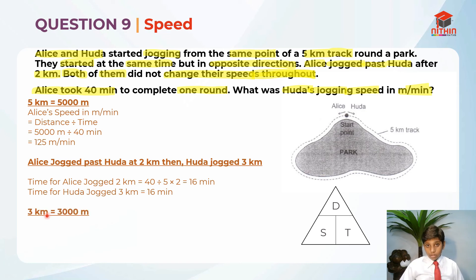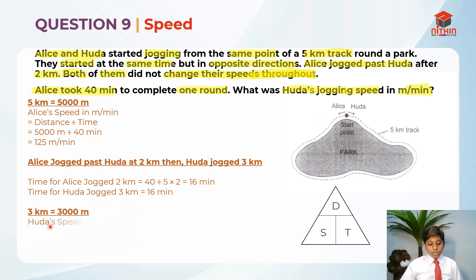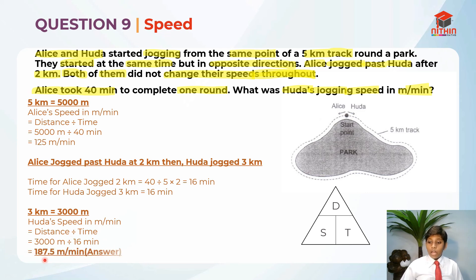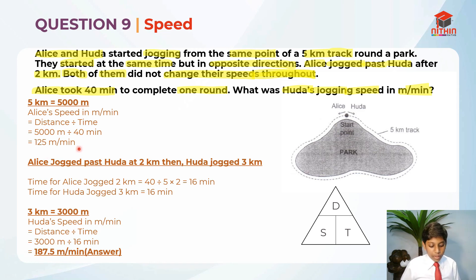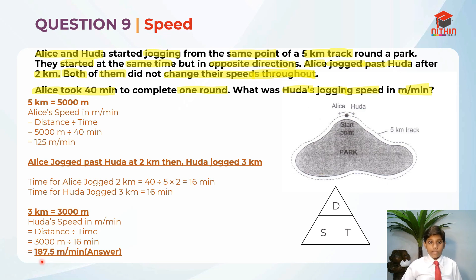We convert 3km into 3000 meters. Huda's speed in meters per minute is distance divided by time: 3000 meters divided by 16 minutes, which equals 187.5 meters per minute. You can verify this by comparing with Alice's speed of 125 meters per minute — Huda is faster, so the answer makes sense. If your answer were below 125 meters per minute, you would know it is wrong.